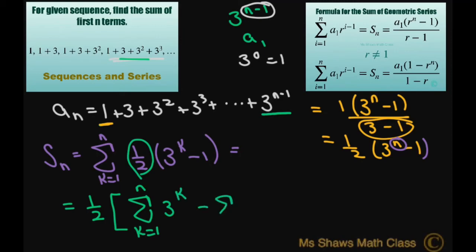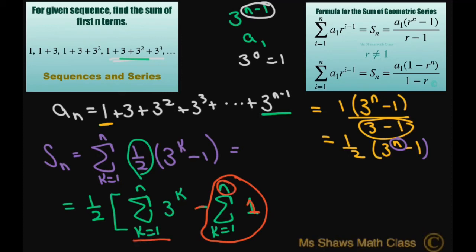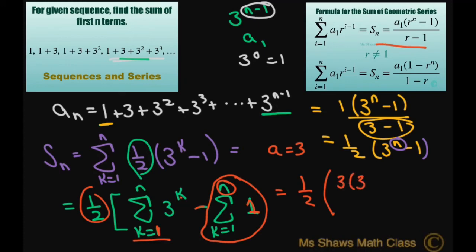And then minus the sum from k equals 1 to n of 1. Now this part here is just going to be n — that's 1 times n. For this piece, we're going to use the geometric series formula. That gives us one half, with the first term being 3 when you substitute k equals 1. So that's 3 times 3 to the power of n minus 3 to the power of n minus 1, divided by 3 minus 1, using the formula.